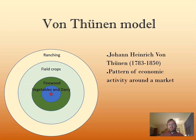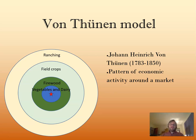Von Thunen proposed that these activities are arranged in a similar way around each market center — each town is going to have the same set of rings of different kinds of economic activities. The classic illustration shows the set of rings von Thunen identified looking at towns on the plains of northern Germany, an area where the isotropic plane assumption comes closer to reality since there are no big mountain ranges disrupting things.